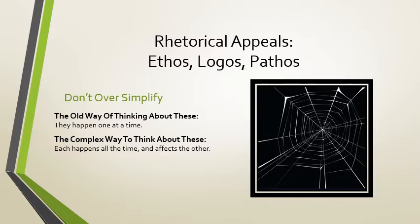Now let's get a little bit more specific. You have to think holistically — you have to think about them all at the same time. How is one appeal affecting the other appeals? So now let's get a little bit more specific and talk about how each appeals to the audience differently.